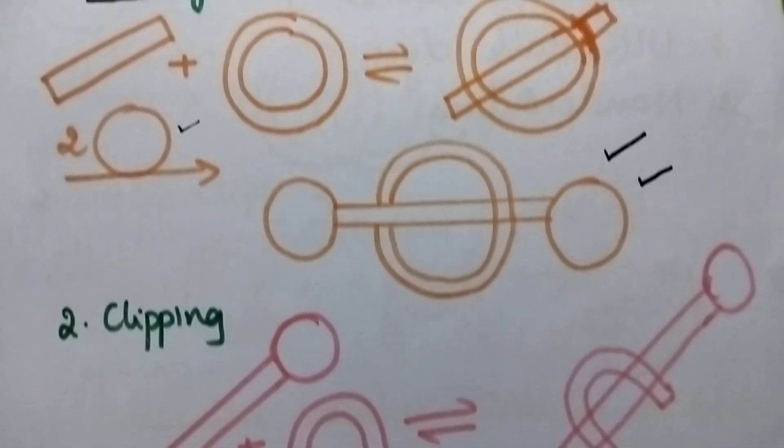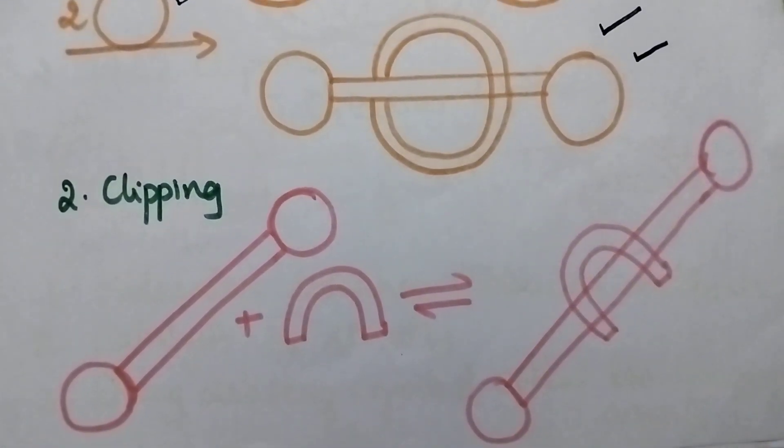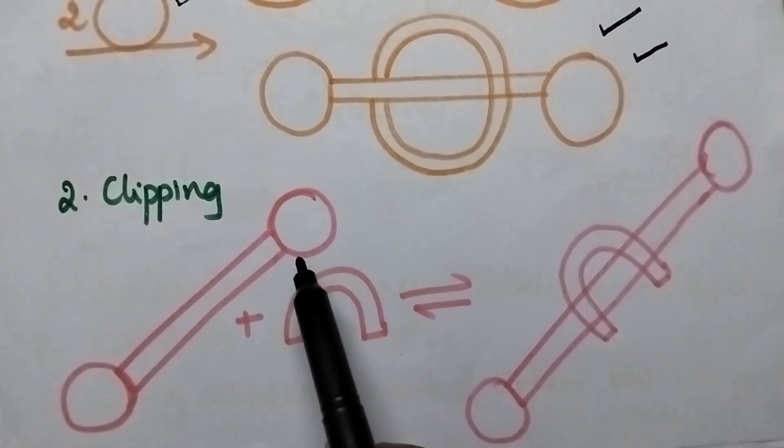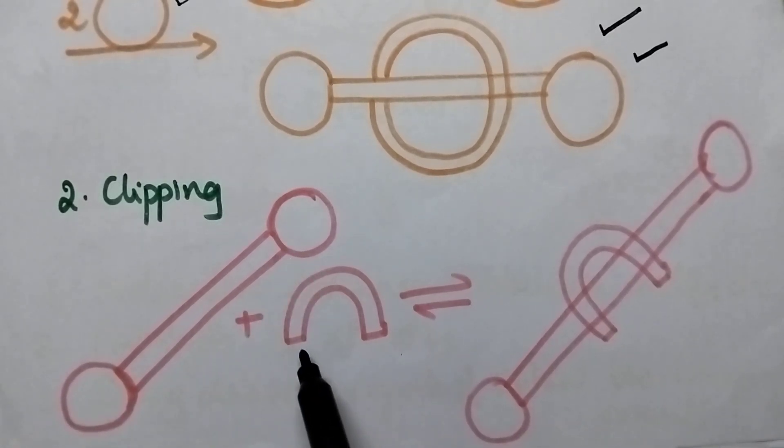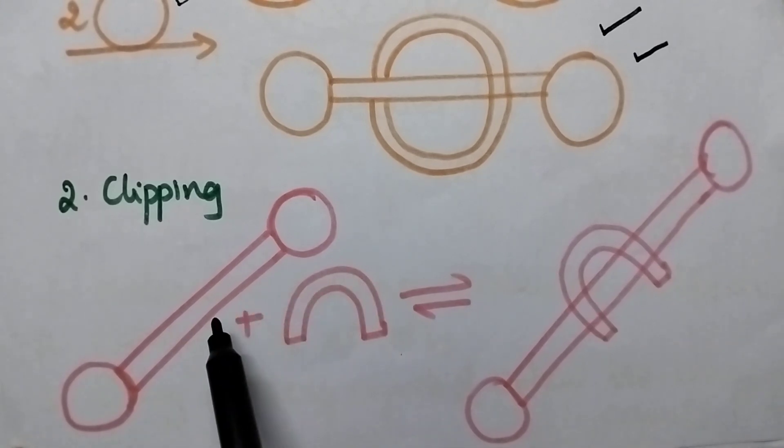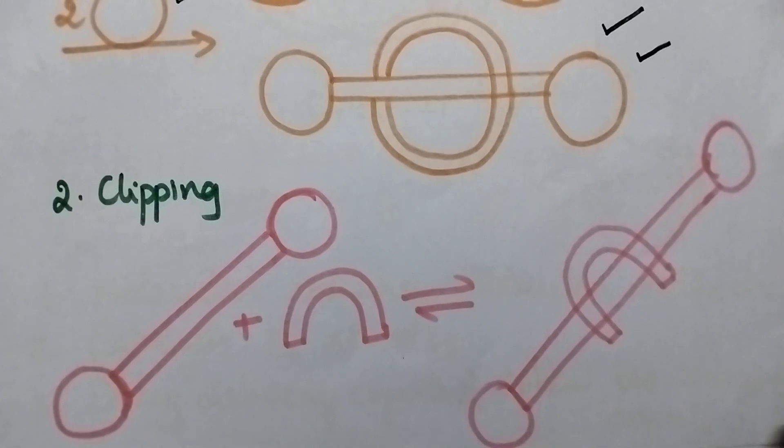Moving to the second method, it is called the clipping process. Here, a dumbbell-shaped molecule is available. So initially, the partially closed macrocycle is inserted into the shaft, and in the second step, the complete cyclization takes place.